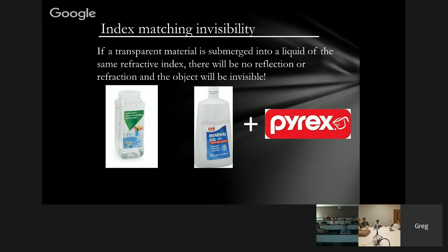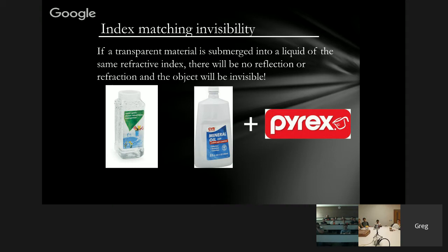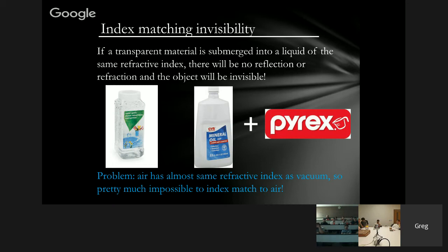For our case, this still isn't really a good way to make an object invisible, because we'd like something that's invisible in air. Air has almost the same refractive index as vacuum, and it's pretty much impossible to do index matching to air. So those early science fiction efforts had the right idea, but not really any sophistication to them.